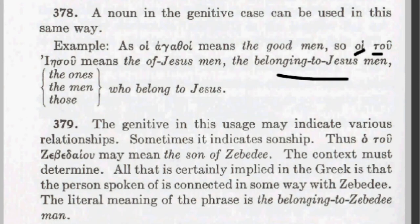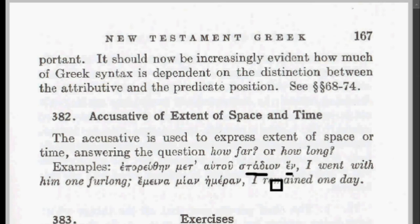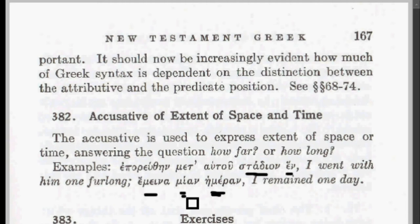The last thing to notice is the accusative of extent with respect to either space or time. If I'm speaking of a certain distance — one furlong — I could put that in the accusative: hen stadion, the neuter form of one with stadion in the accusative, meaning 'one furlong.' Similarly, 'stayed with him one day': emeina mian hēmeran — both in the accusative, translated 'I remained one day.'